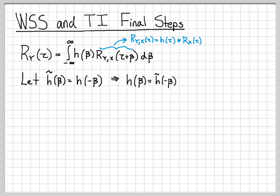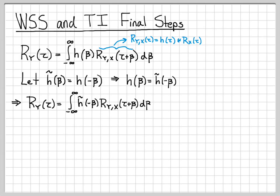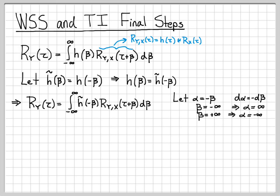Since h-tilde is the time-reversed impulse response, h(β) equals h-tilde of negative β. Swapping that out in our integral expression, we can rewrite the autocorrelation function of y. Then we do a change of variable: let α = −β, so dα = −dβ. When β is negative infinity, α is infinity, and when β is positive infinity, α is negative infinity. We can now rewrite our integral in terms of the dummy variable of integration α.